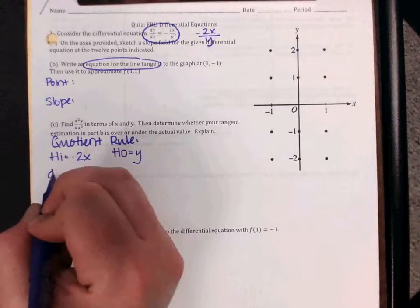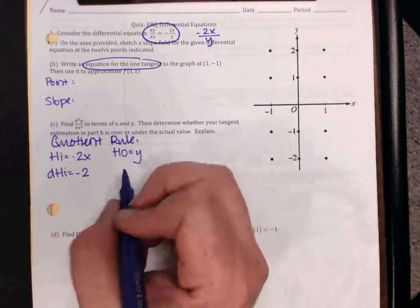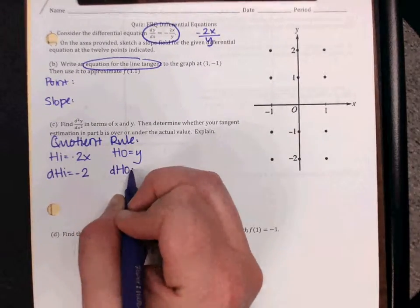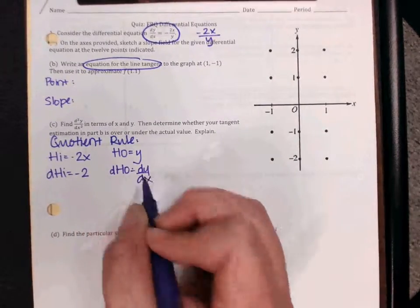Well then d high, the derivative of negative 2x is negative 2. d ho is dy dx.